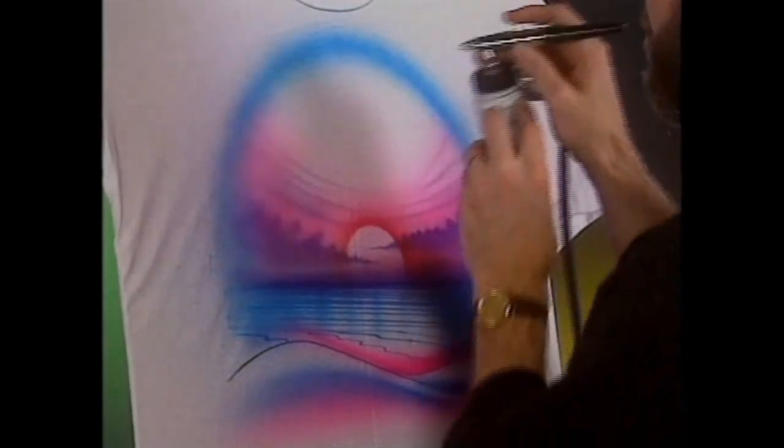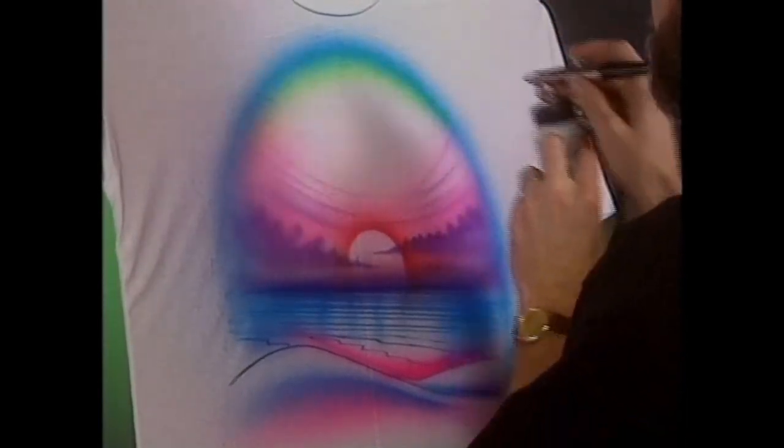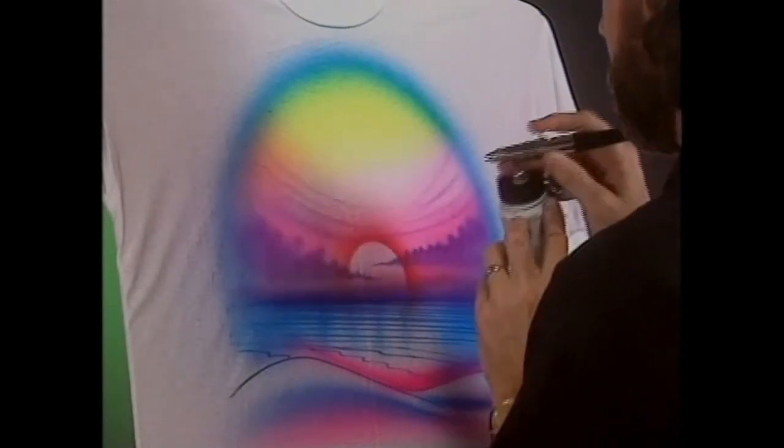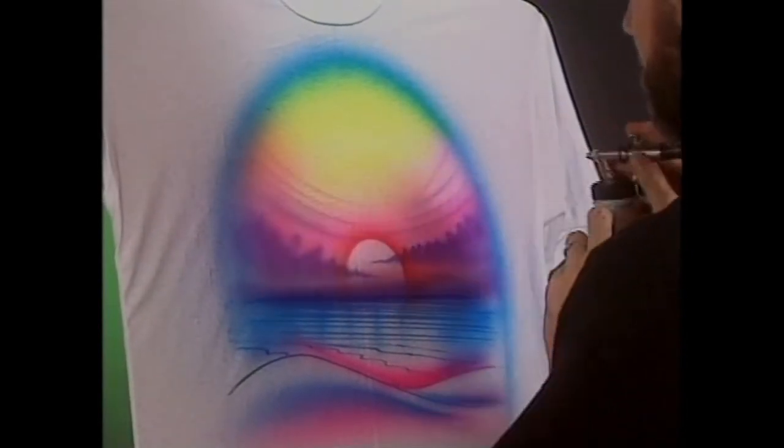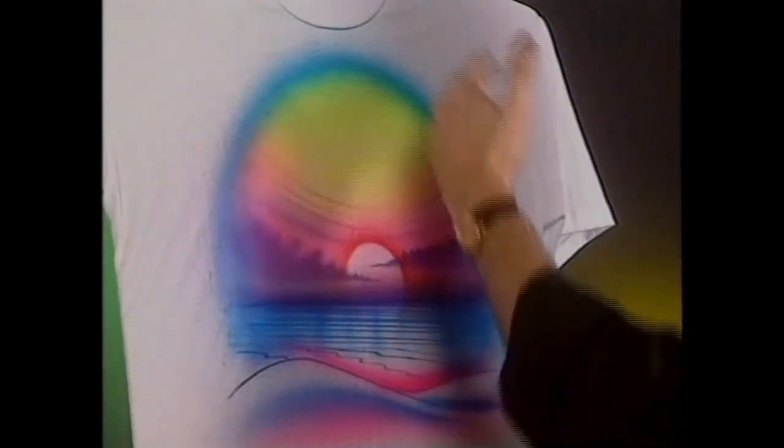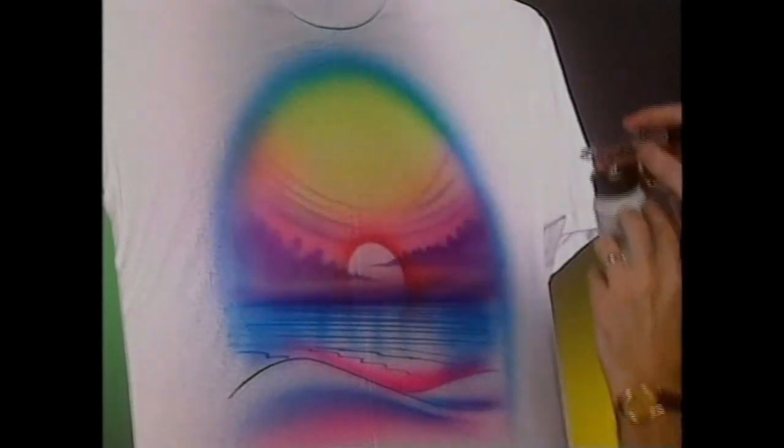Next thing I pick up is a neon yellow. And I fade that into the blue which makes a green. And I fade that down into the pink. What you want to try to do is keep your colors from being too muddy.